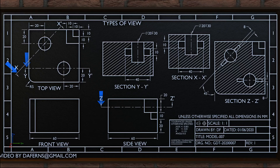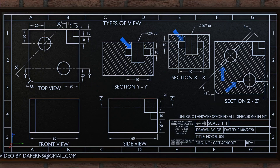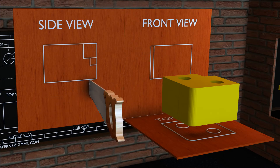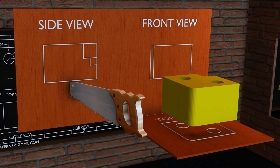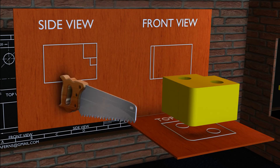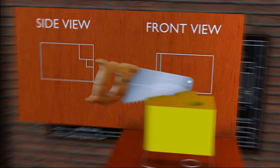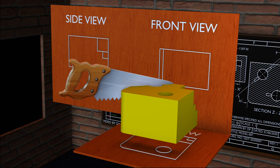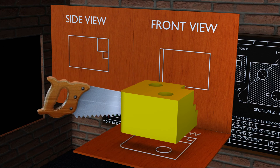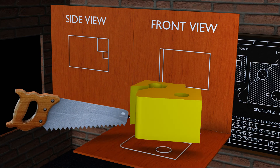Considering this example, we have three section views provided: section X-X, section Y-Y, and section Z-Z. These views will give us details of features like depth of the hole feature and dimensions of internal features. To get the section view, I am going to cut the object at the location defined in the engineering drawing. First we'll cut the object to get section X-X. As you can see, a saw is used to cut the section, as seen on the screen. There we have the cut section of the object.